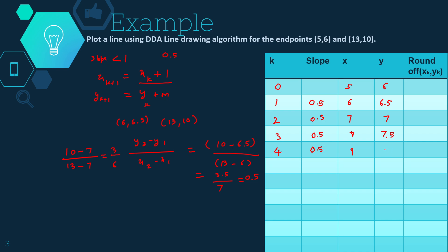Continuing the iterations: X=8, Y=7.5 → X=9, Y=8 → X=10, Y=8.5 → X=11, Y=9 → X=12, Y=9.5 → and finally X=13, Y=10, which is the last endpoint. So we have reached the endpoint (13, 10).